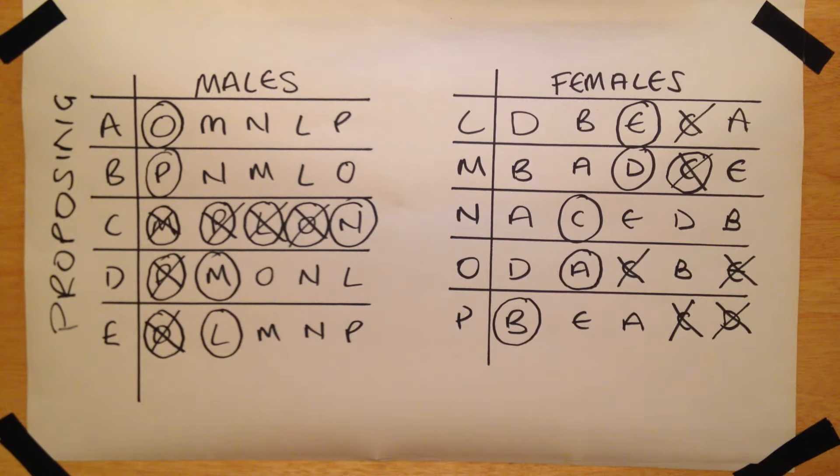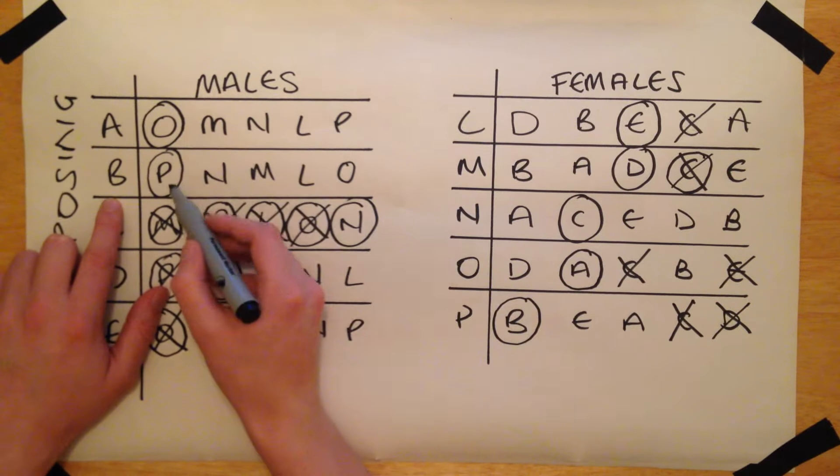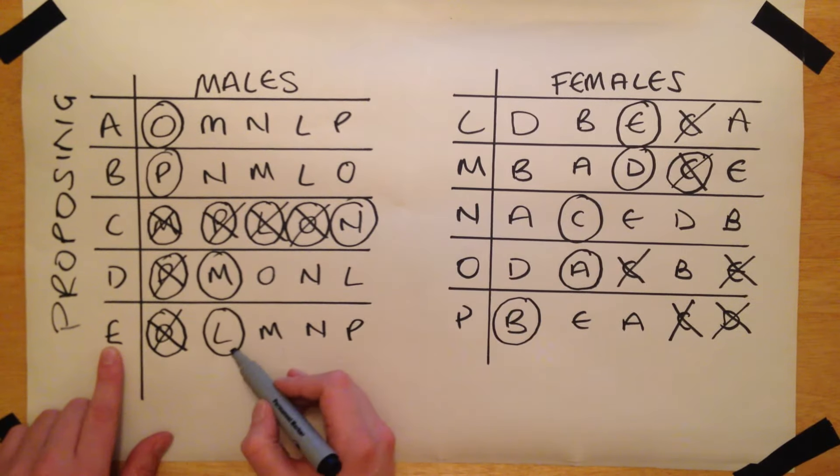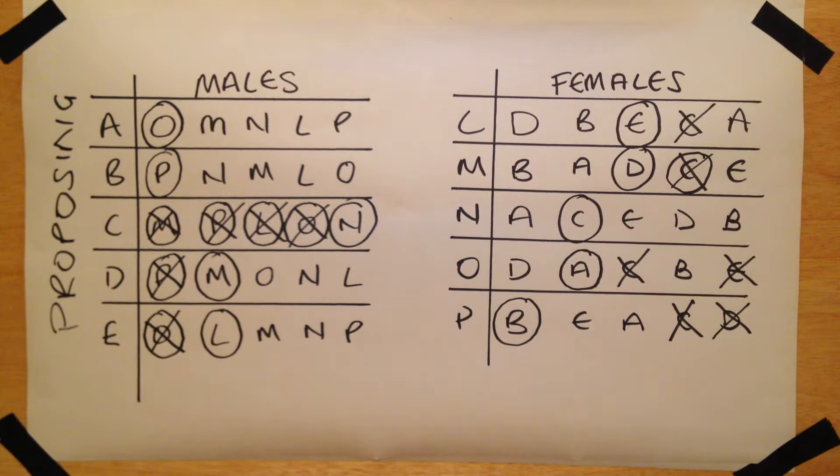All of the males are now engaged, and as there is no need for any more proposals, the current pairings are married, with the final pairs being A-O, B-P, C-N, D-M and E-L. All people have been successfully paired, and while certain individuals did not get their preferred choices, the matching is stable.